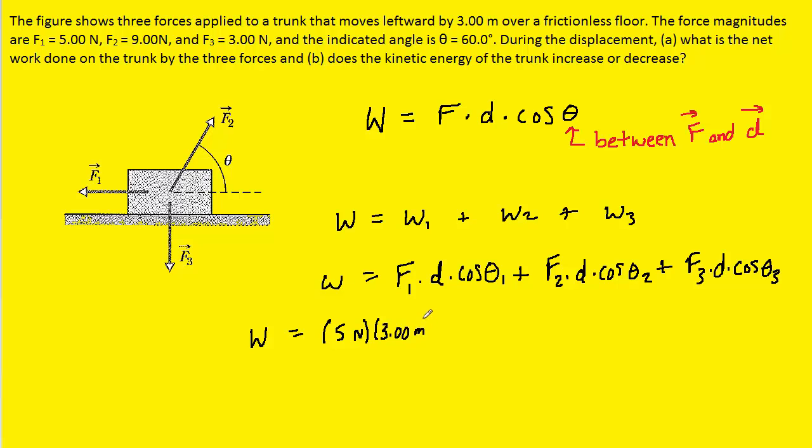Notice that we're plugging in just positive three meters, because for the distance as well as the force, we are only interested in the magnitudes of these values, not their signs. We then get to the cosine of theta one.